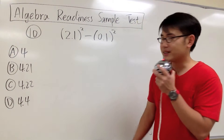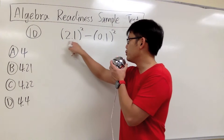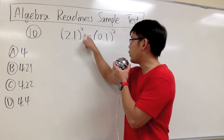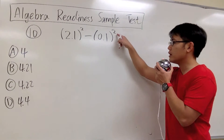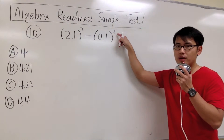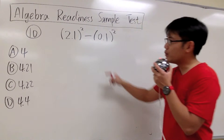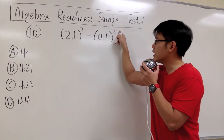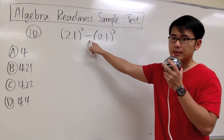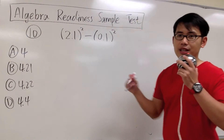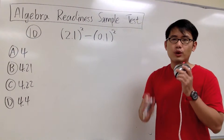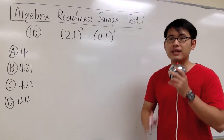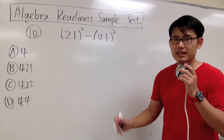For number 10, we are going to work this out. We have 2.1 to the second power minus 0.1 to the second power. We see that we have the powers and also the subtraction. The order of operations says we have to work out the powers first, and then subtract.